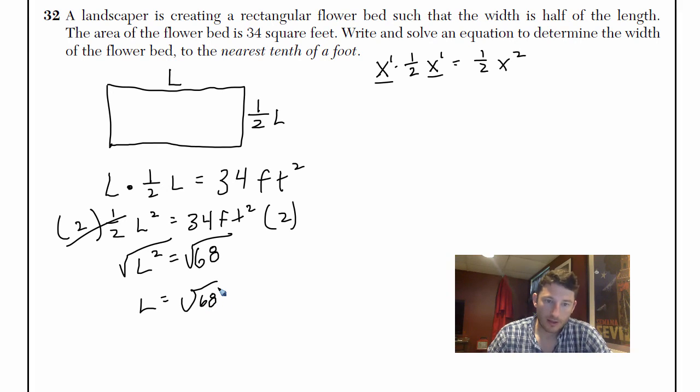Now the only thing is they don't want radical 68 like that. They want it as an answer to the nearest tenth of a foot. So the length is radical 68. So let's do that. Radical 68, 8.2462. So length is 8.2462.